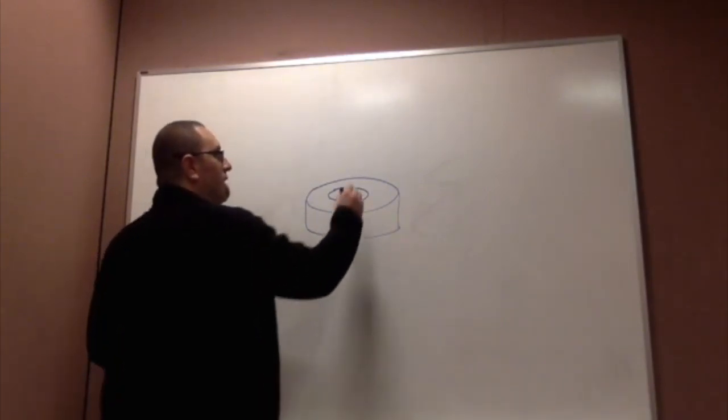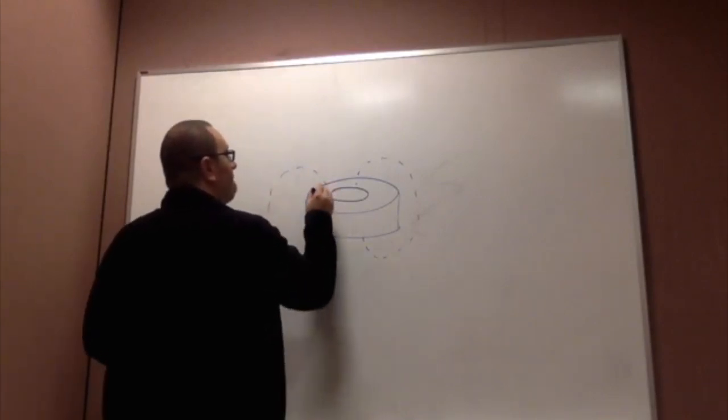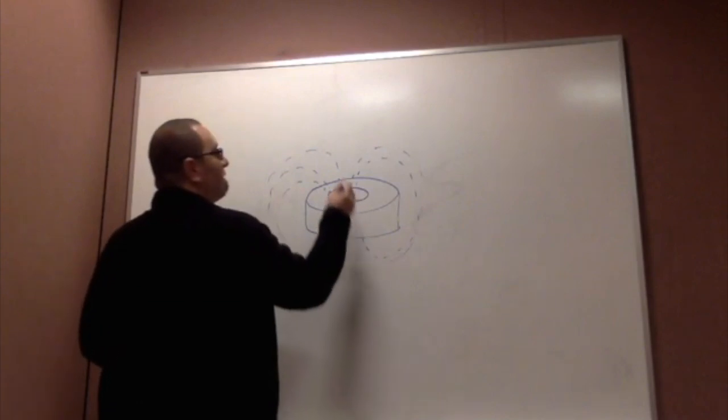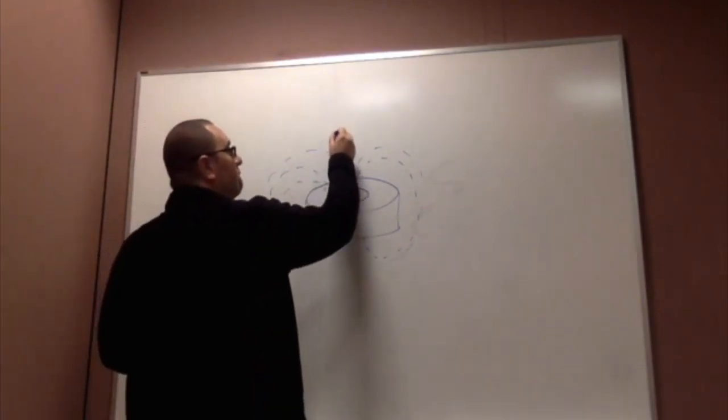So the flux lines coming out of this thing look more like that. And there's this region in the middle here where it's kind of weak. It's still repelling, but it's weak.